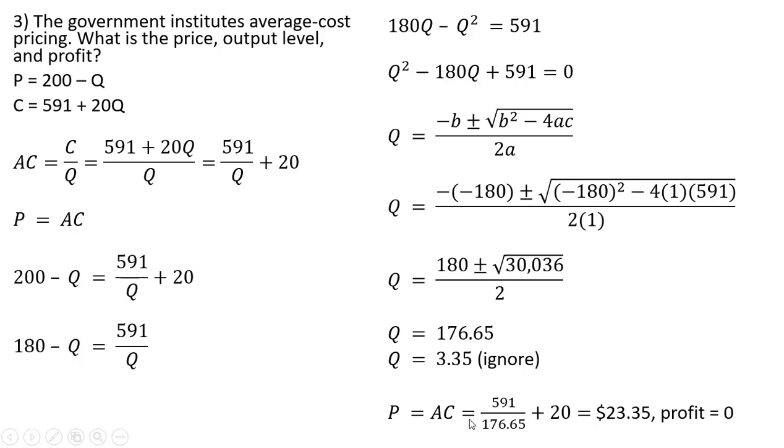We will take this 176.65 and plug it into average cost. Doing that, we get a price of $23.35. And profit will be zero because price equals the cost per unit, average cost.